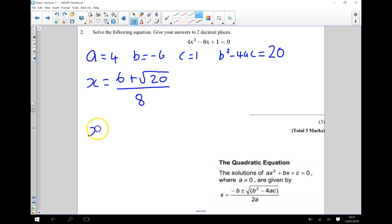Okay and I've also got x is equal to 6 take away the square root of 20 divided by 8. I've got it once with a plus and once with a take away. So I can now use my calculator to work out what each of these are to 2 decimal places.